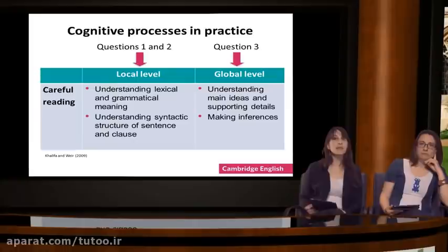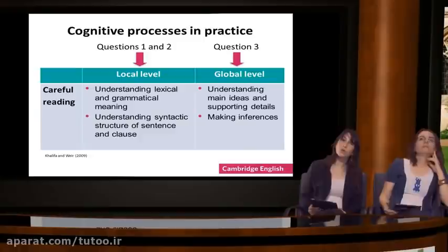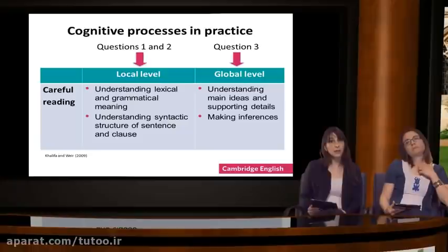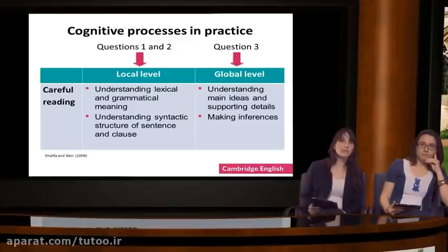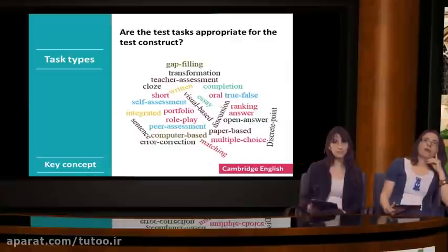Going back to the three questions, questions 1 and 2 tapped into reading at the local level, whereas question 3 was tapping into reading at the global level. In other words, these questions activated different types of cognitive processes in reading. A key point here is that neither one of these questions is good or bad. What is important is whether the questions in a test trigger appropriate cognitive processes. For example, when developing a test for beginner learners, it may be appropriate to have more questions at the local level, because beginner learners are still mastering basic linguistic knowledge related to vocabulary, grammar, and syntax. However, in a test for intermediate or advanced learners of English, you may need to include questions which focus both on the local and global understanding of the text.